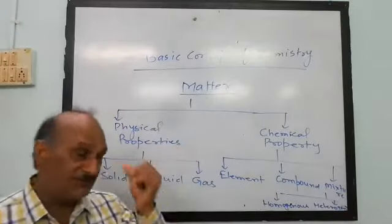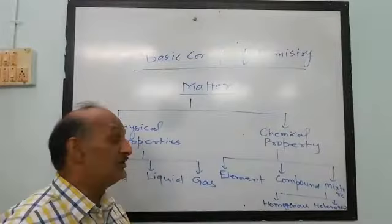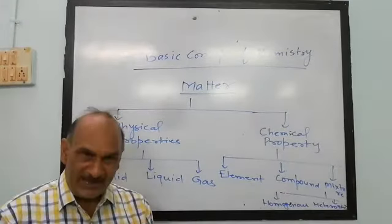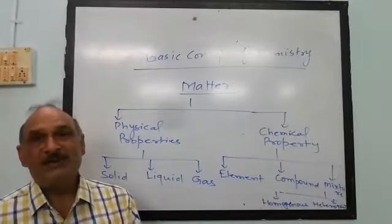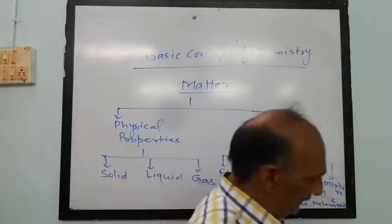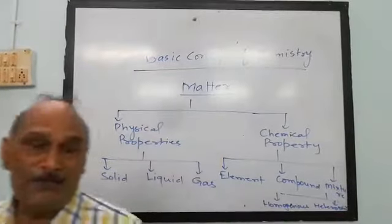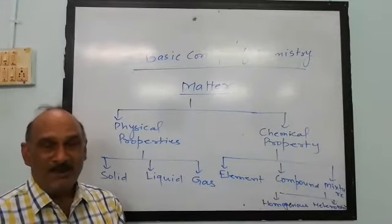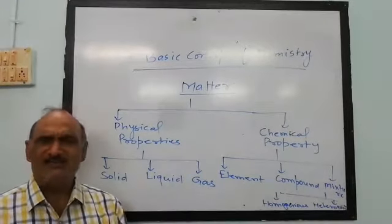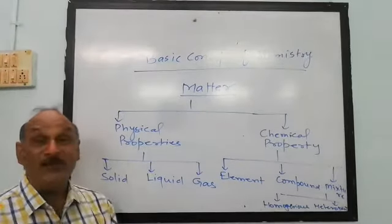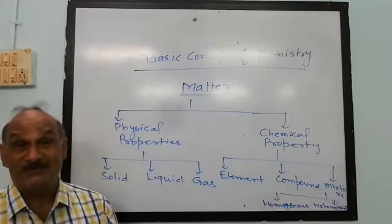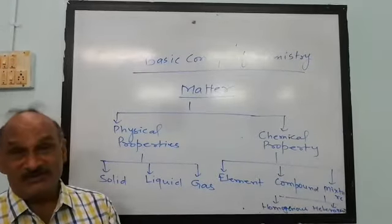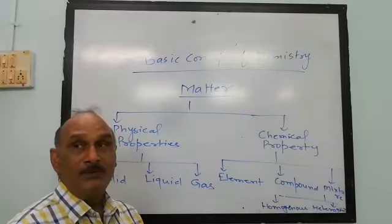Homogeneous mixture is a type of mixture in which components cannot be separated easily. Components can be separated, but not easily. For example, if you add sugar in water, you cannot separate sugar from water easily. If you add sodium chloride in water, you cannot separate it easily. But by evaporation, fractional distillation, or crystallization, you can separate them — these processes require a laboratory and apparatus not easily available at home.